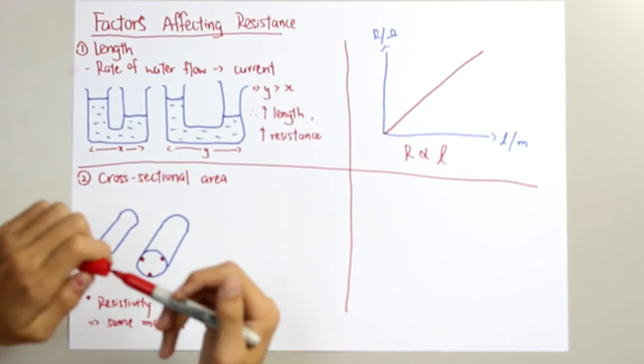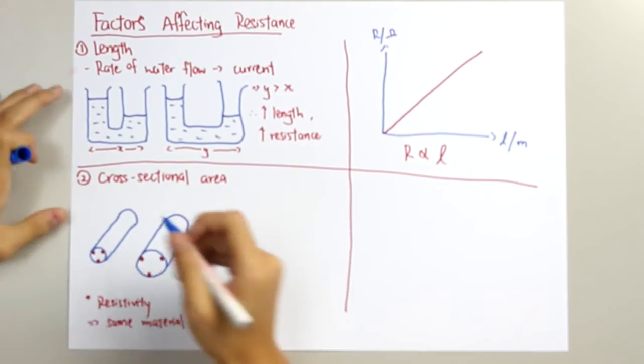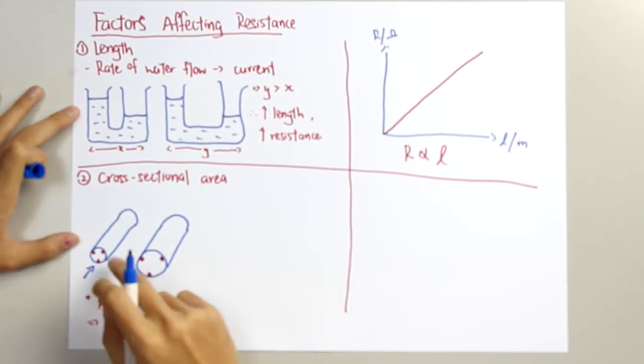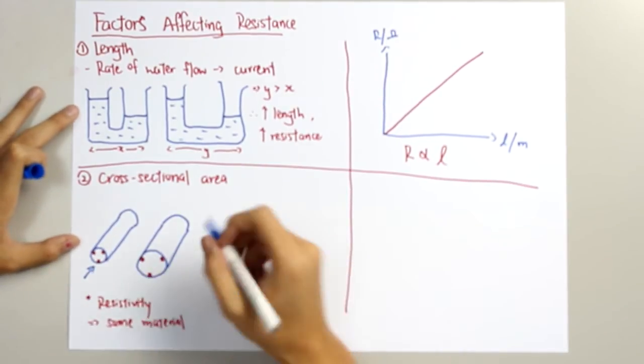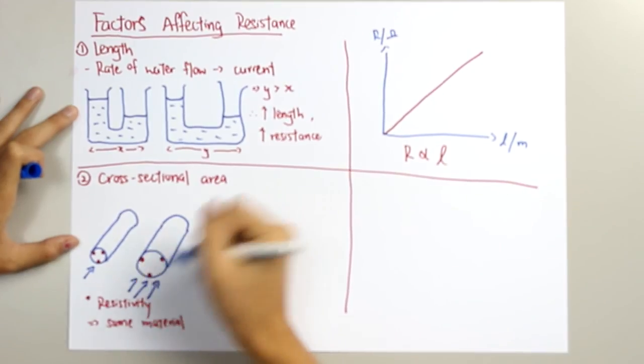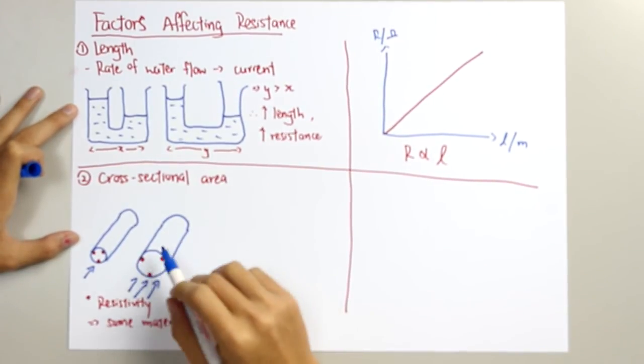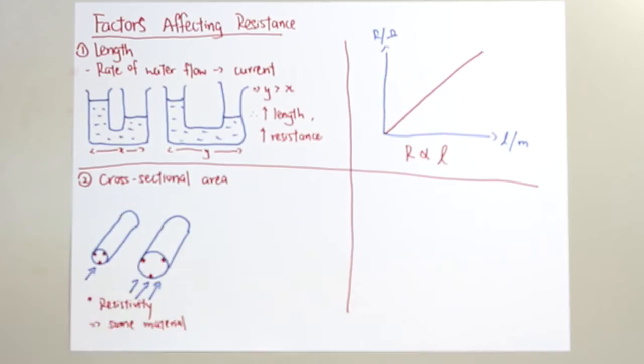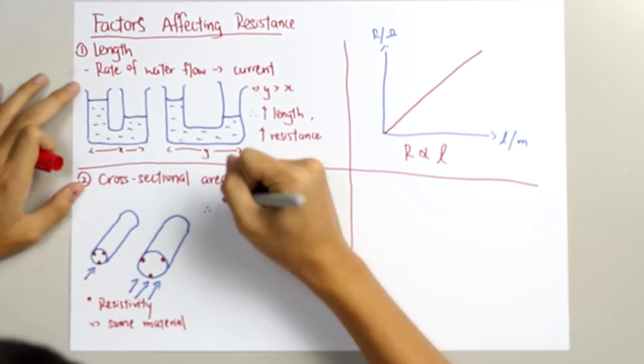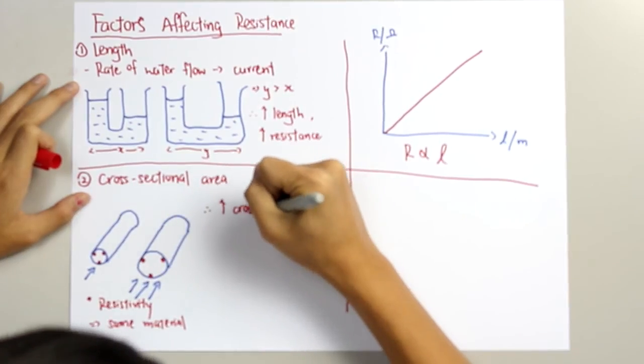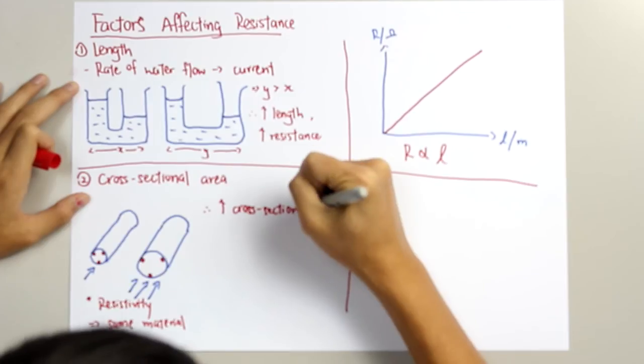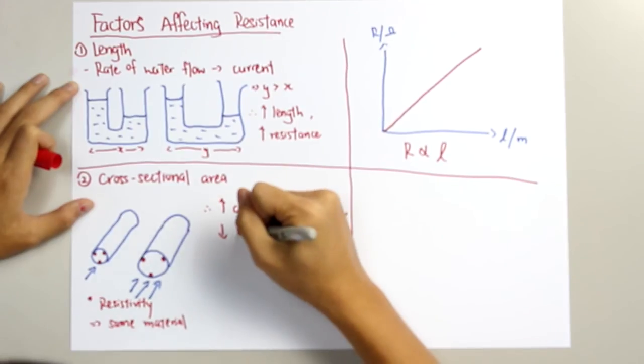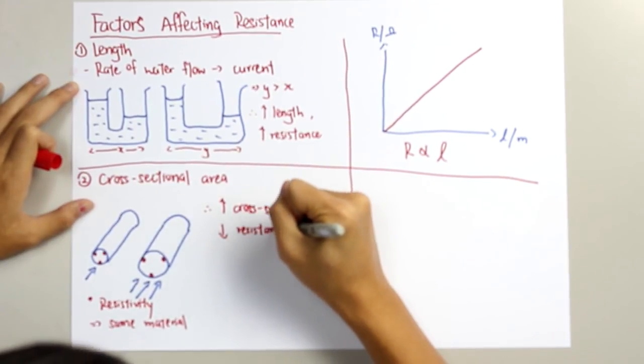For the first pipe, the water hardly flows through the pipe as there is less space for the water to flow. Whereas, it is relatively easier for water to flow through the second pipe as it has a greater cross-sectional area. And therefore, we can conclude that the greater the cross-sectional area, the lower the resistance or vice versa.